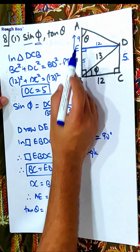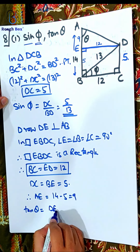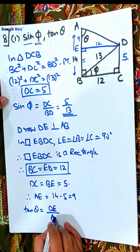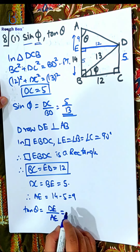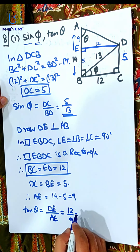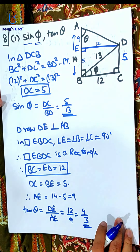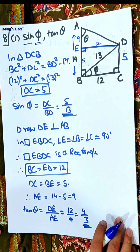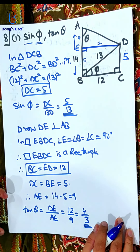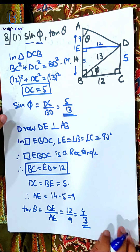So finally now: tan θ — opposite DE upon adjacent AE. So that should be 12 by 9. Simplifying, you get 4 by 3. How many got this correct? Good job. Did you understand how to go about with the sum? If you have doubts, repeat the video and see it again.